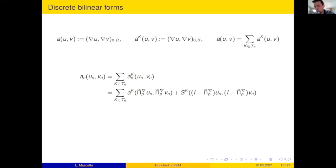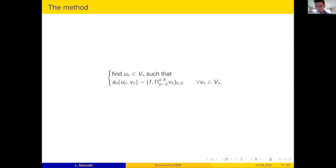And then I have the discrete bilinear form, which is, as usual, no surprise, sum of local contributions. Each local contribution is the sum of a consistency term and the stability term. The only extra twist is that the projection is not onto standard polynomials. And the stabilization needs to satisfy lower and upper bounds: coercivity and stability and continuity. Surprises on the design of the method? No, absolutely not.